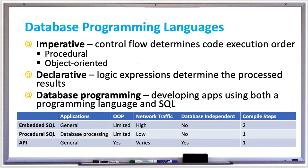An API, which stands for Application Programming Interface, is a code library that contains all kinds of database functions you can use in your program. For example, Java has JDBC to make connecting and updating your database a lot easier. A comparison table on screen shows embedded SQL, procedural SQL, and API, comparing their applications, support for object-oriented programming, network traffic, database independence, and number of compiler steps.